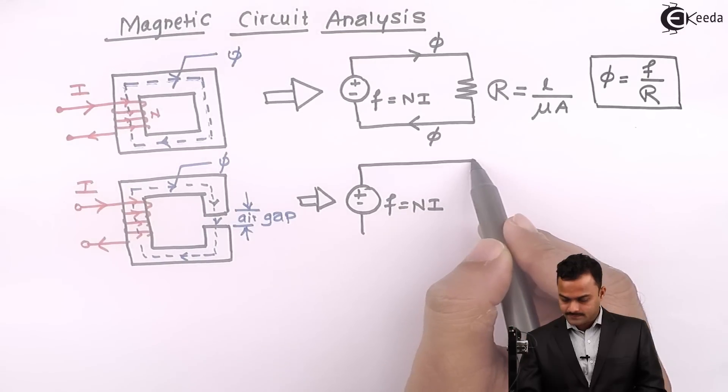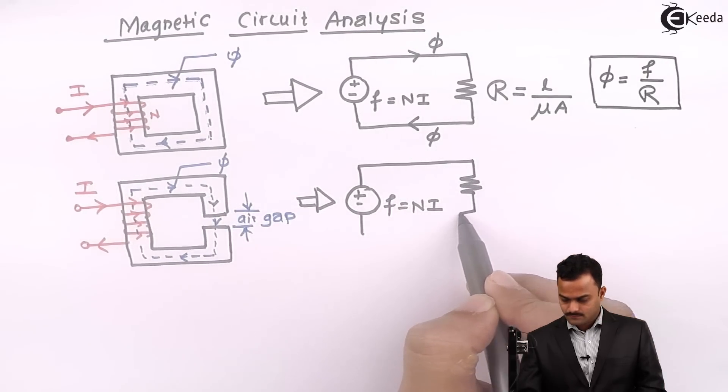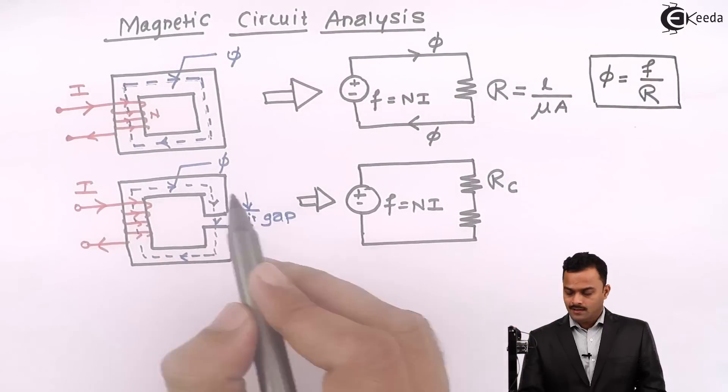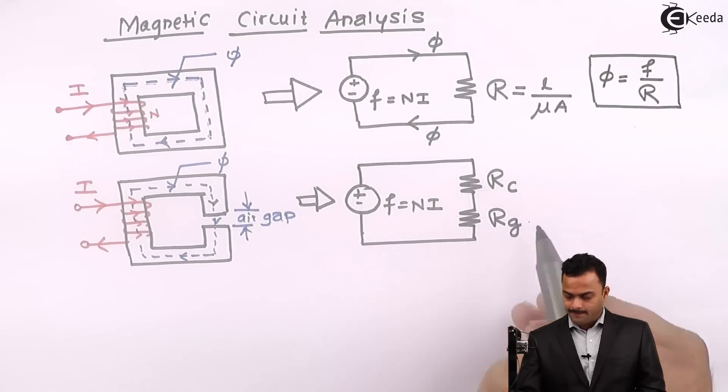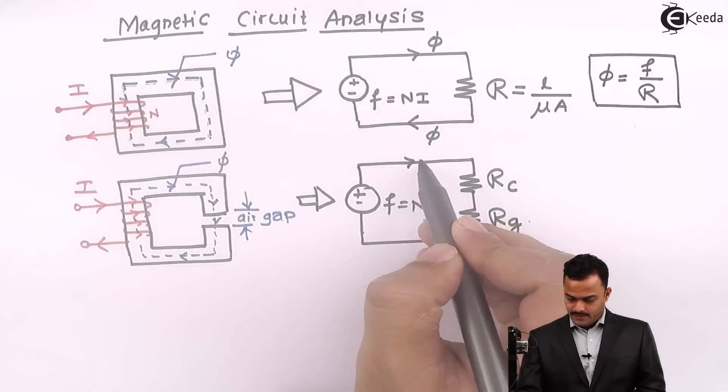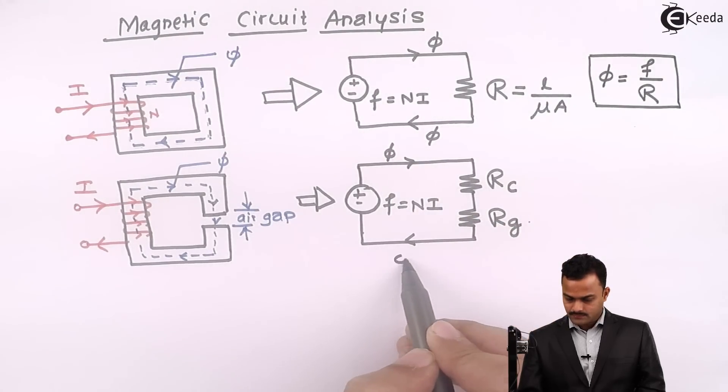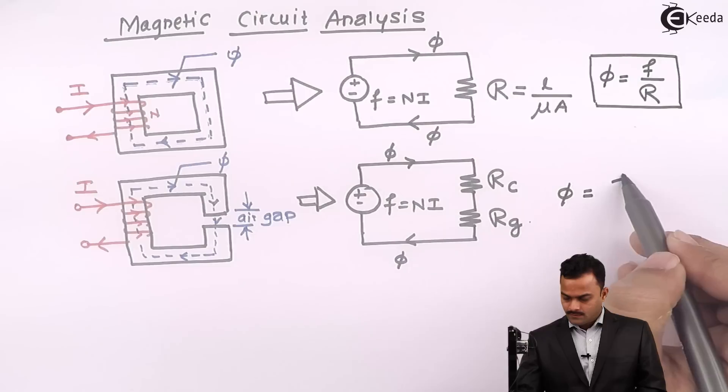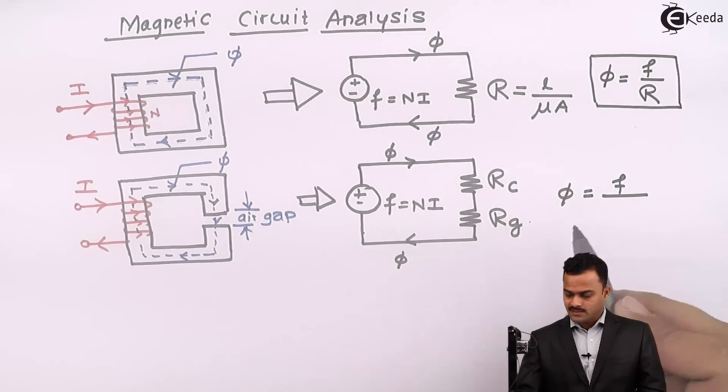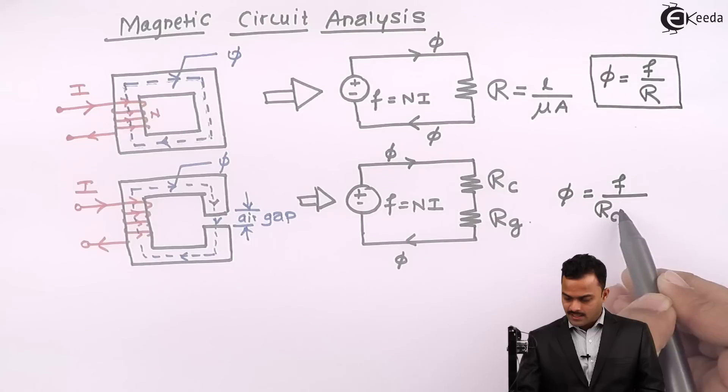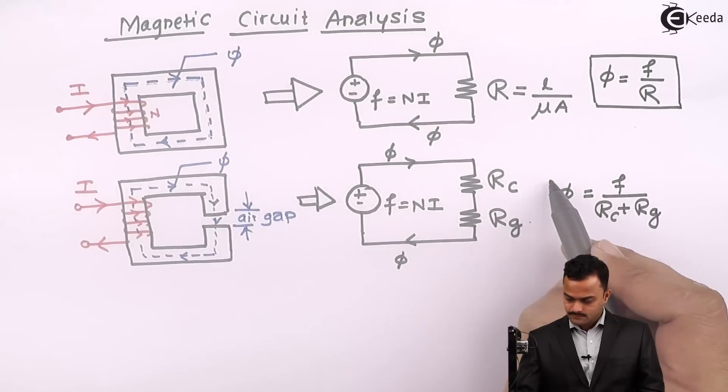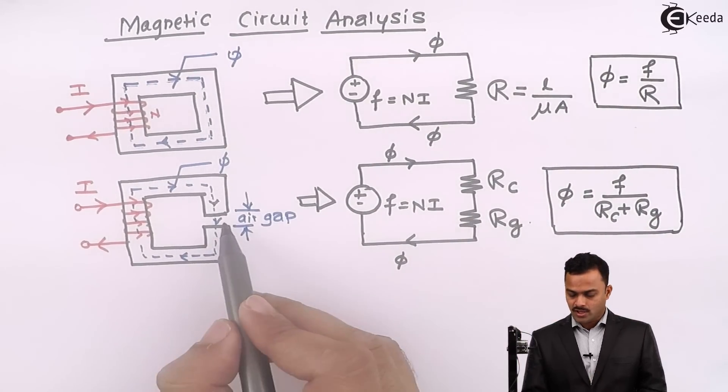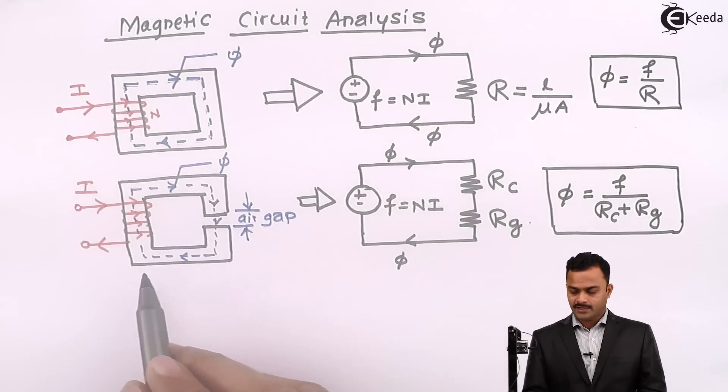Now, since two circuits will be present because the permeability is different for the magnetic core and the air gap, I will have two reluctances in series. I will get a circuit like this where this is the reluctance of the core Rc and this is the reluctance of the air gap Rg. Why are the reluctances different? Because the air gap has different permeability than that of the core.